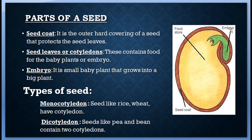There are two types of seeds: monocotyledon and dicotyledon. Monocotyledon seeds, like rice and wheat, have one cotyledon. Dicotyledon seeds, like pea and bean, contain two cotyledons.